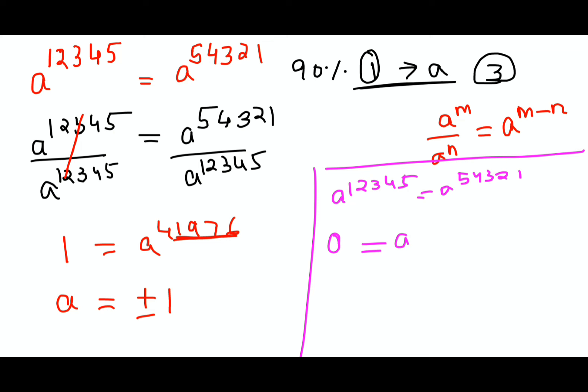In this case, we will subtract a^12345 from both sides: a^54321 - a^12345.